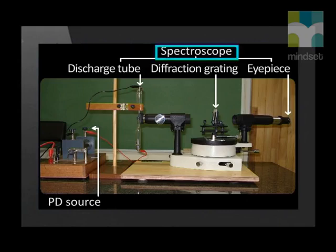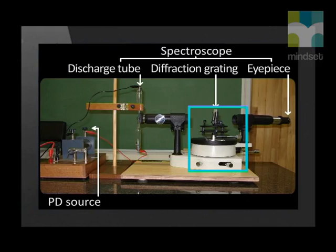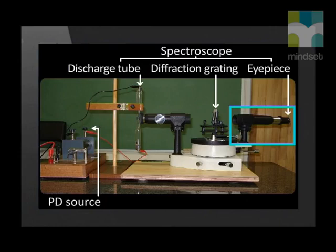We now have a glowing gas, but how does that help us make a line emission spectrum to identify the unknown gas? To make and see the line emission spectrum we need a spectroscope. Part of the spectroscope houses a small slit which lets only a narrow beam of light in. In the middle is a diffraction grating, which diffracts light into its component colors. On the side is an eyepiece through which we can observe the spectrum while the gas glows.